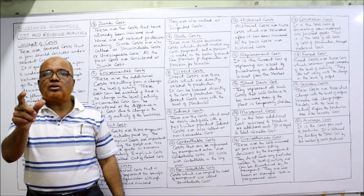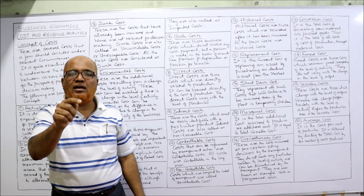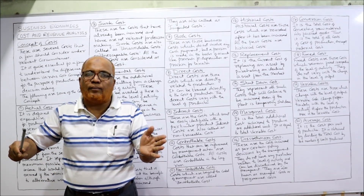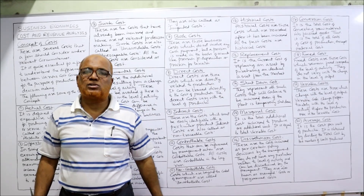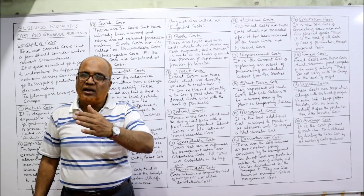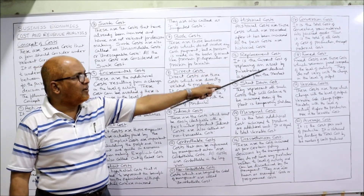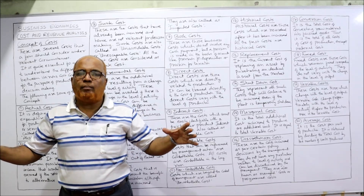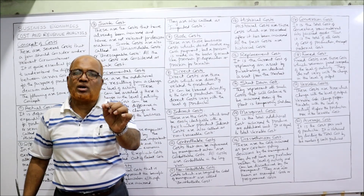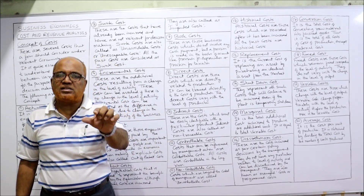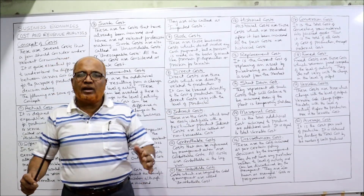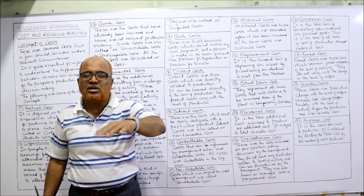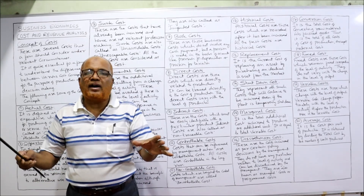Next is conversion cost — the cost incurred to convert raw material into finished goods. From the total cost of production, if we exclude material cost, the remaining cost is called conversion cost. Fixed cost is the cost which remains fixed irrespective of the level of activity. Whether we produce more goods or fewer goods, fixed cost remains the same — there is no change in fixed cost regardless of the level of activity. Variable cost, on the other hand, varies or changes according to the level of activity. More activity means more variable cost; less activity means less variable cost; no production means no variable cost.